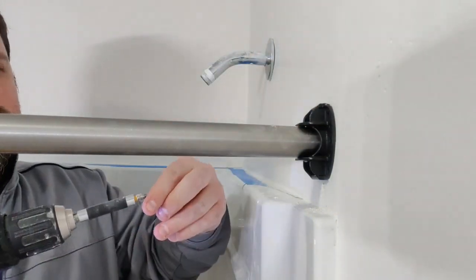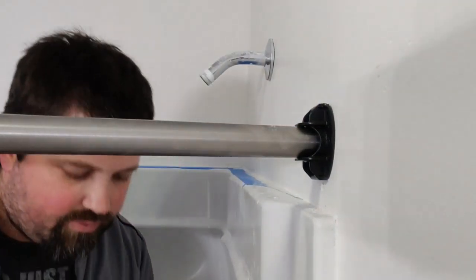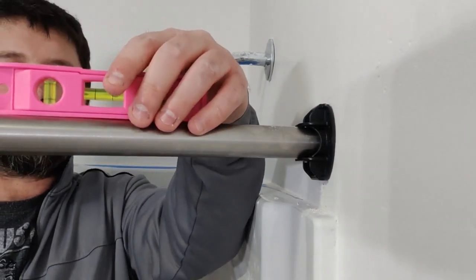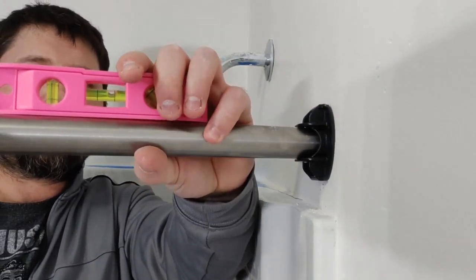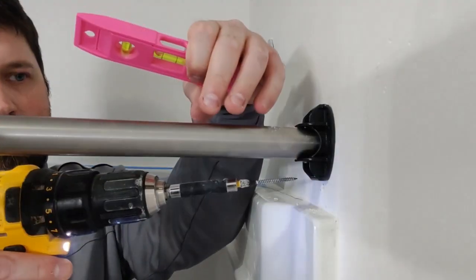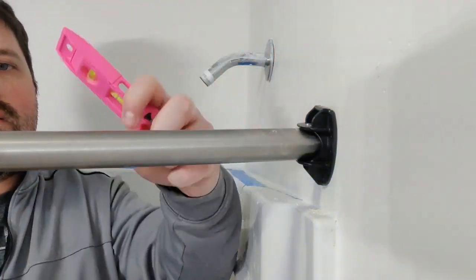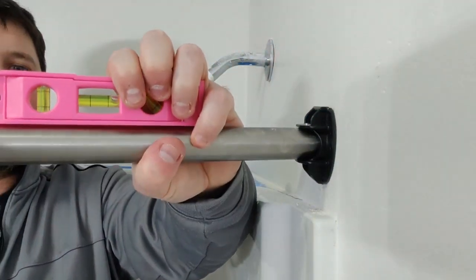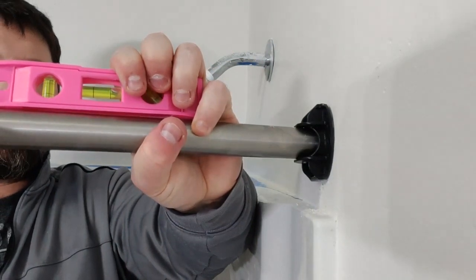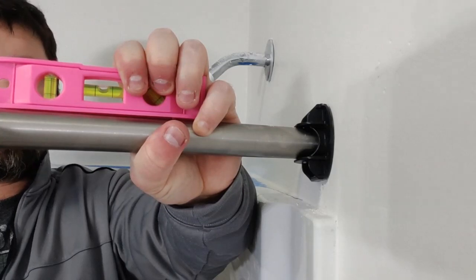Screw it in like so. And again this right here you might want to use your level. And yes it is pink you're not seeing things. And you're going to twist that up, put that in a little tight. And now you're just going to twist that up and get that level. Like that. Yep just like that. And then screw it in.